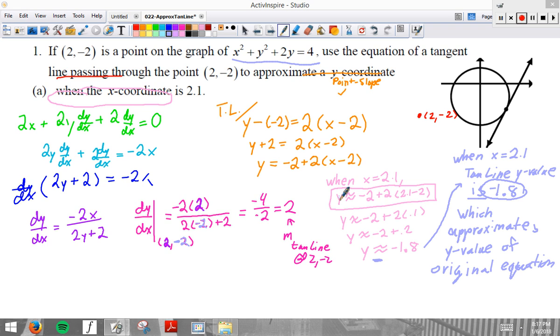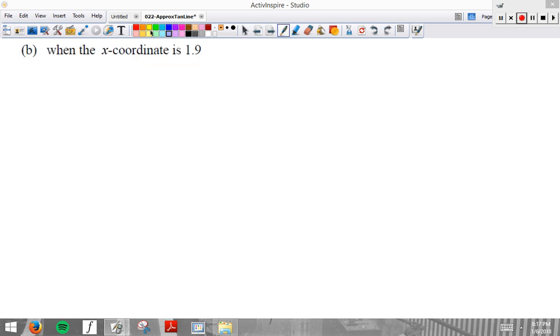It shouldn't be bad. This should be a good unit. Okay. One more time for good measure. When the X coordinate is 1.9, 1.9 is still close to 2.